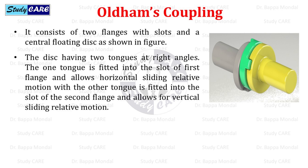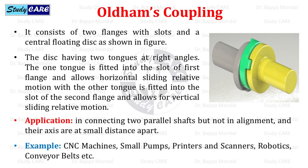Next is Oldham's coupling. It consists of two flanges with slots and a central floating disc, as shown in the figure. The disc has two tongues at right angles — one tongue fits into the slot of the first flange allowing horizontal sliding motion, and the other fits into the slot of the second flange allowing vertical sliding motion. Oldham's coupling is used to connect two parallel shafts that are not in alignment and whose axes are a small distance apart — for example, CNC machines, small pumps, printers and scanners, robotics, and conveyor belts.